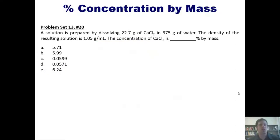Let's take a look at a problem. A solution is prepared by dissolving 22.7 grams of CaCl₂ in 375 grams of water. The density of the resulting solution is 1.05 g/mL. The concentration of calcium chloride is blank percent by mass. I'm not going to do this for you, but I will post a link here to a separate video which you're welcome to watch.